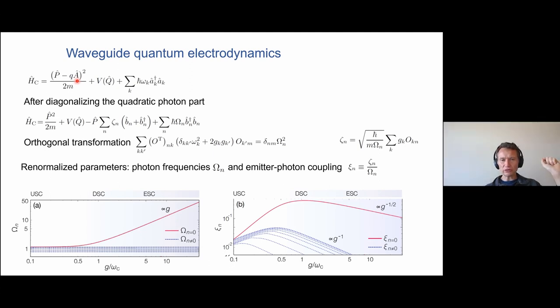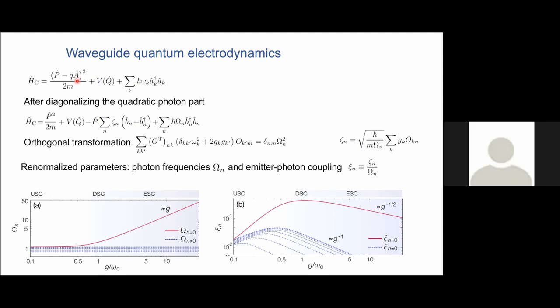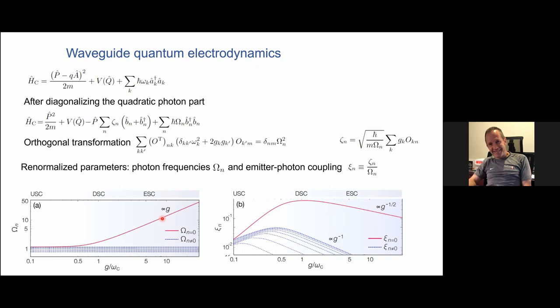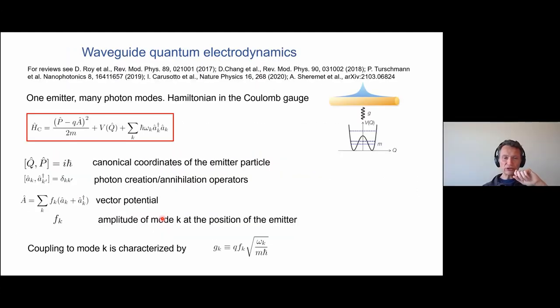There was a question from Leo Radzihovsky. The relation of g to the minimal coupling: g is proportional to the field amplitude, proportional to the square root of the frequency of the photon modes, and proportional to the charge. There's an explicit expression one can write.